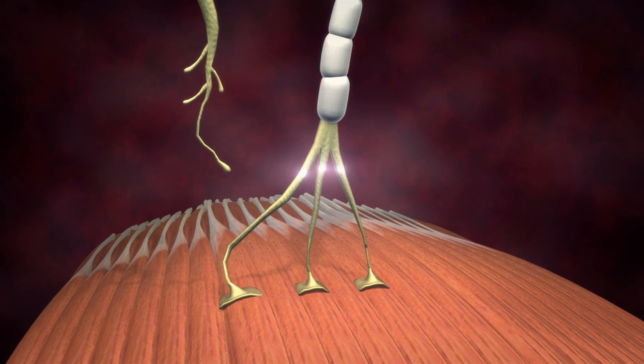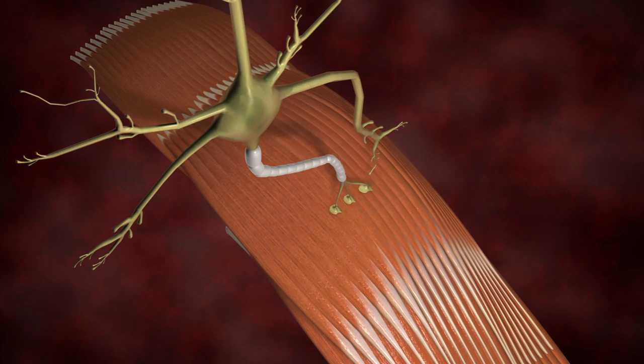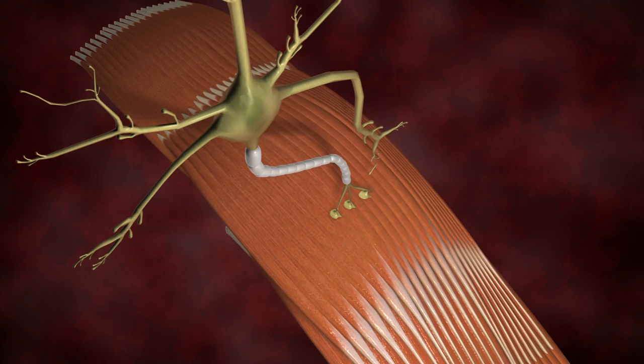Lower motor neurons branch out to muscles throughout the body. Motor signals originate in the brain, travel through motor neurons and cross the neuromuscular junction to stimulate muscle movement.